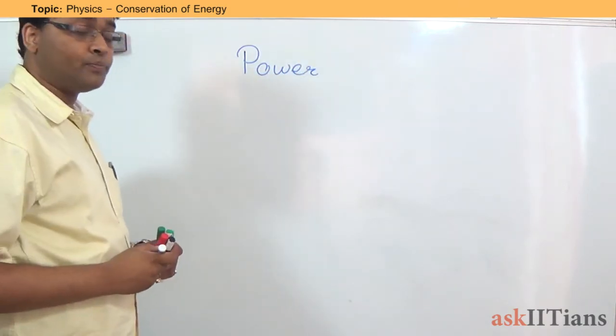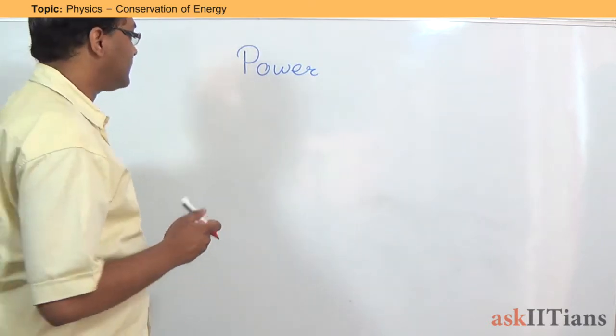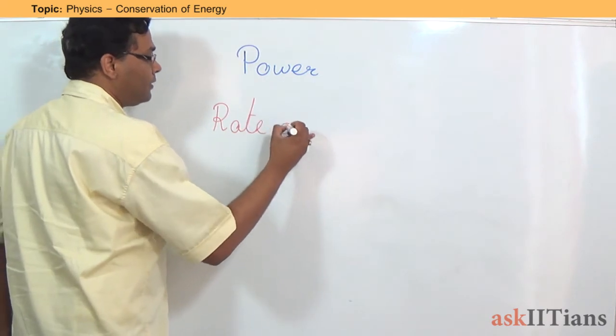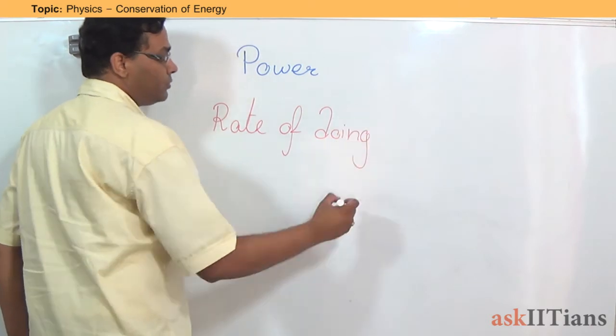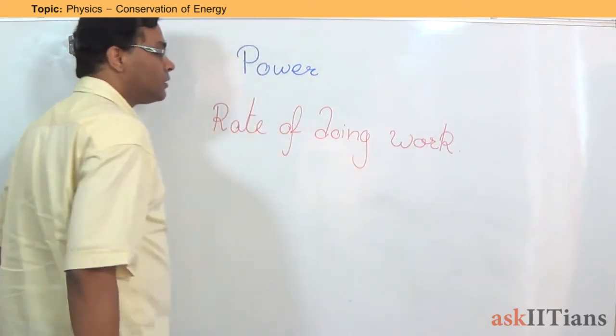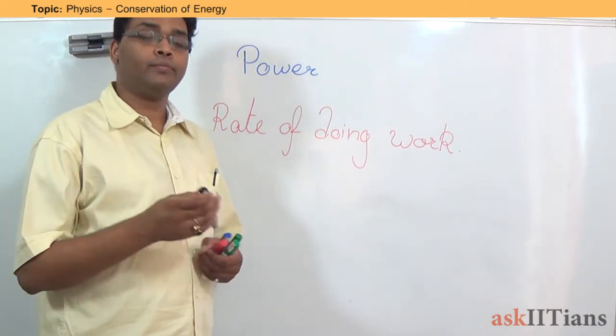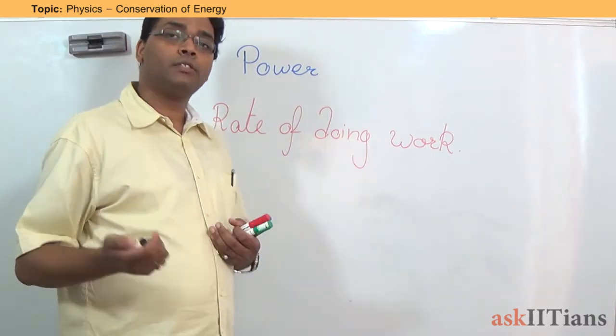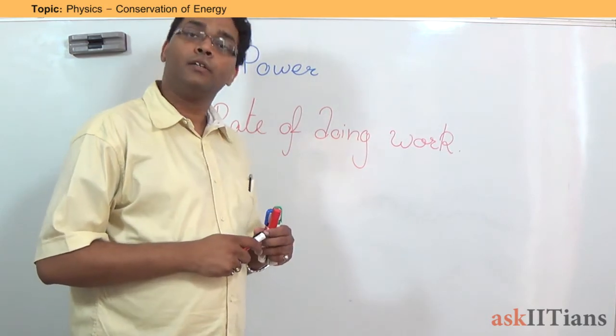So, what exactly is power? Power is basically defined as the rate of doing work. So power is defined as the rate of doing work. So what does this imply? Rate of doing work means how much is the work that you are doing, that is what is meant by power.